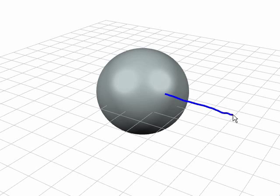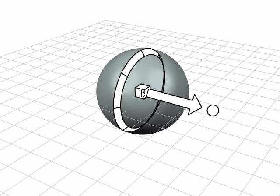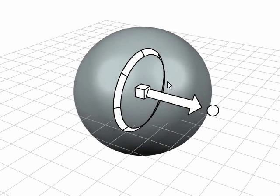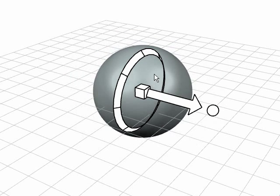The cube widget uniformly scales an object. The user can also cross the cube to toggle between translation and scaling axes.